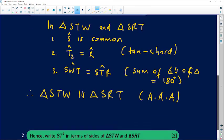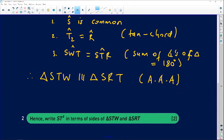Let's go to the last part of this question. They're saying to you: hence. Now this word hence is a key word in math. It literally implies use the above result, use the above result, what you have already worked out, use the above result. Hence, write ST² in terms of the sides of triangle STW and triangle SRT.